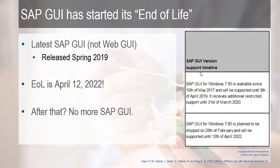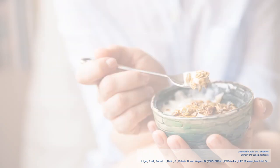The SAP GUI, as you know it, has started its end of life. This is an official SAP graphic. The latest GUI, version 7.6, was released in spring 2019 and has an end date of April 12, 2022, meaning it will no longer be supported. After that, no more SAP GUI. It's not like it's going to implode — it means if Microsoft updates .NET and it no longer works, well, it no longer works. The SAP GUI is familiar to people, but it's going away.